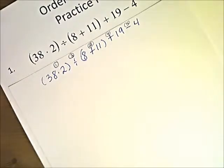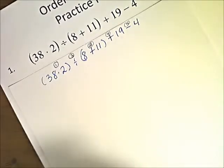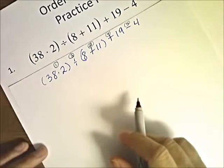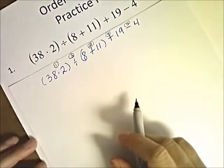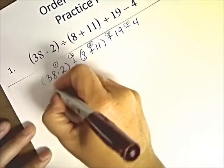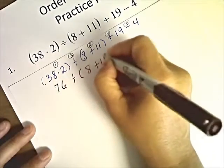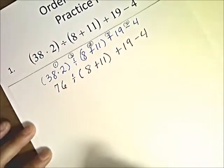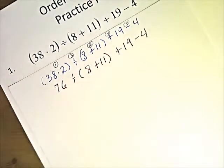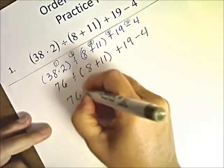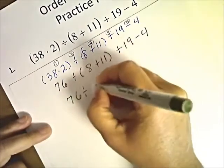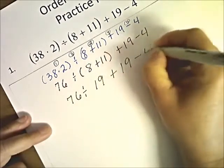We're going to complete those steps in order. So we have 38 times 2 — I think of 40 times 2, which is 80, but I'm two groups of two short, so that's 4 less — that is 76. So: 76 divided by 8 plus 11 plus 19 minus 4. We did step 1. Step 2 is 8 plus 11, so we have 76 divided by 19 plus 19 minus 4.